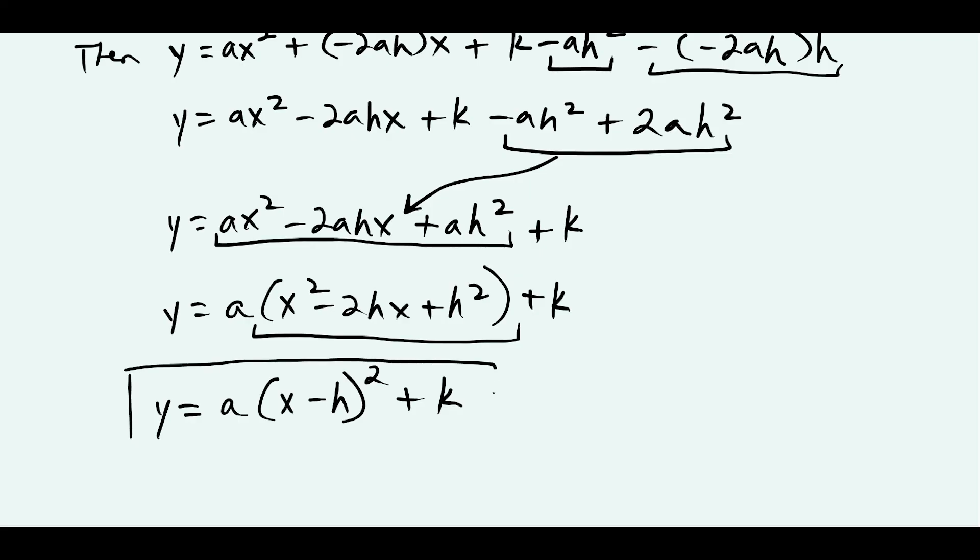We have a(x minus h) squared plus k. So this proves the vertex form quadratic equation.